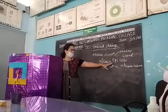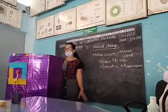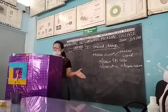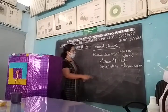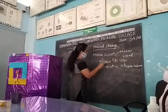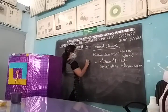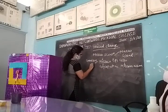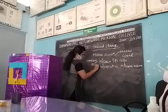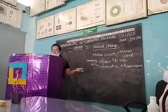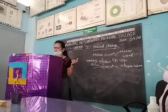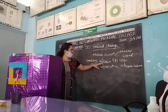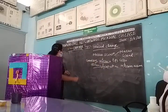Mucin is normally secreted by the epithelial cells of the mucus membrane and mucus gland, as well as by some connective tissues. There are two types: epithelial cell mucin and connective tissue mucin.